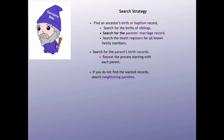Here are the steps in the search strategy I'd like you to learn. You begin by finding a birth or baptism record. Once you know the parents' names, you use them to search for the births of all the siblings. Then you look for the parents' marriage record.